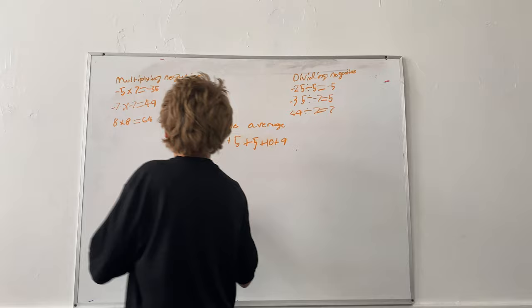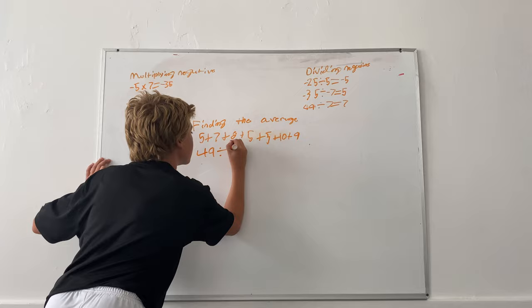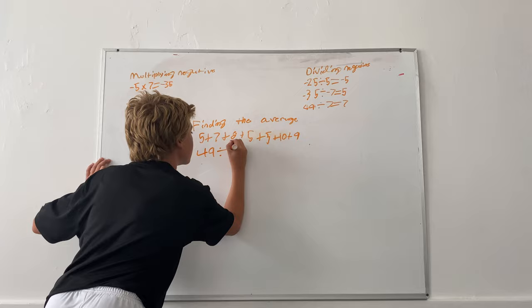So what you would want to do is take 49, the number you got from adding them all together, and since there are 7 numbers here—1, 2, 3, 4, 5, 6, 7—divide it by 7, which would equal 7. So that is the average of this equation. Thank you.